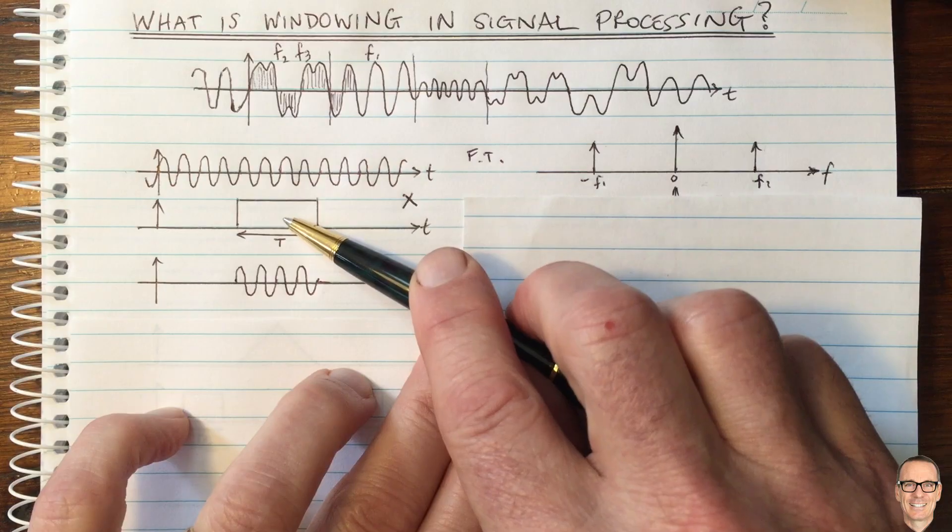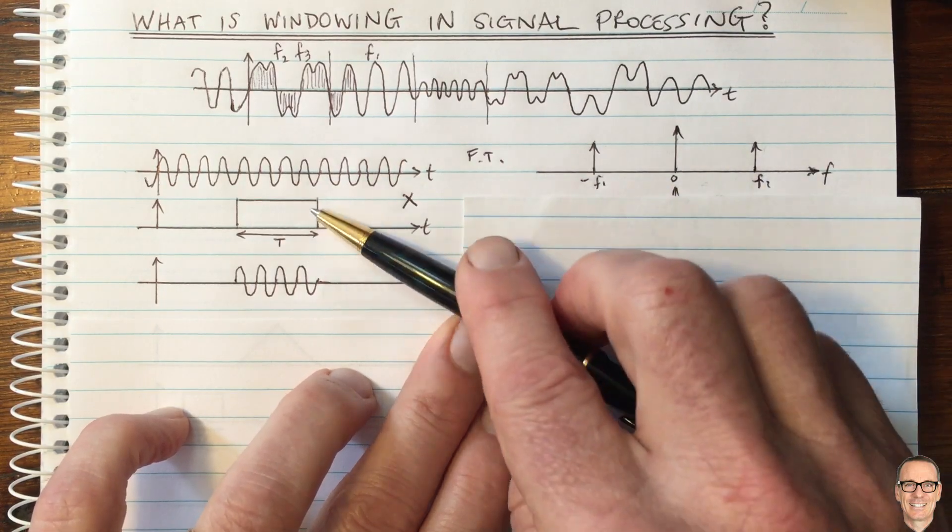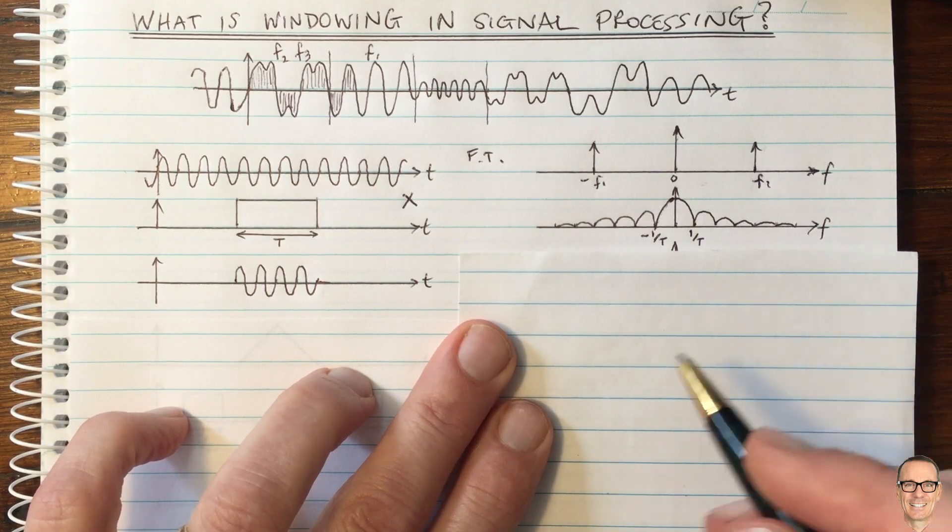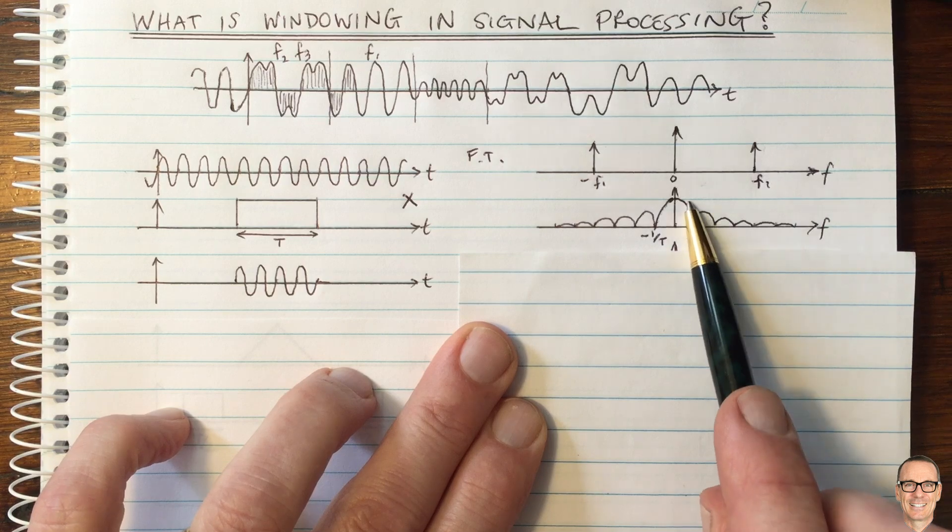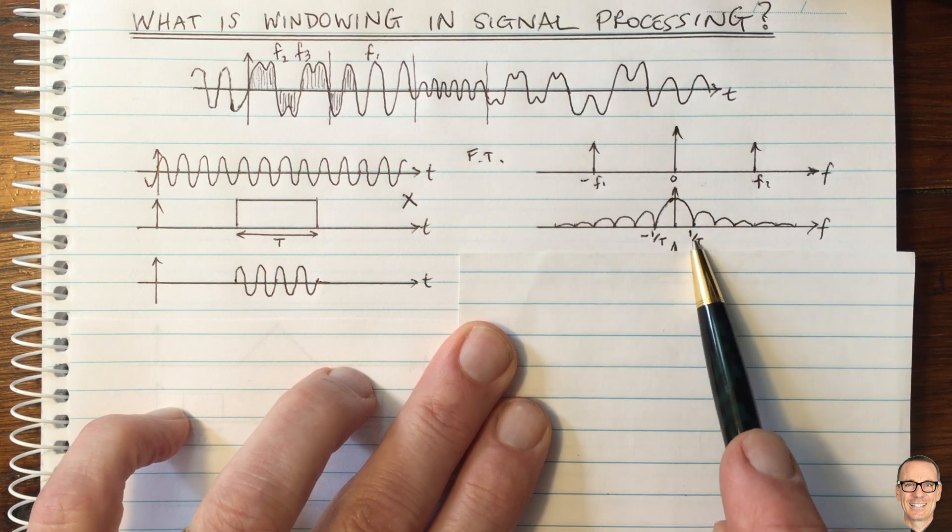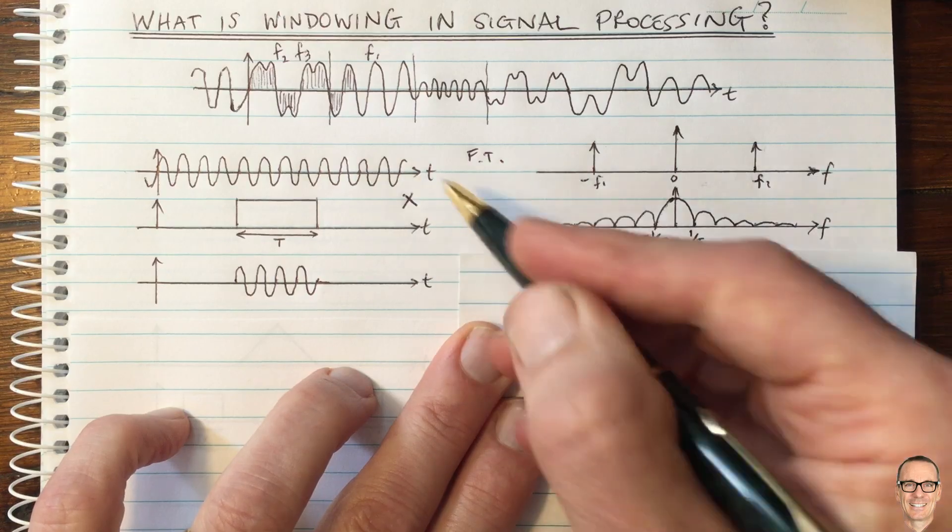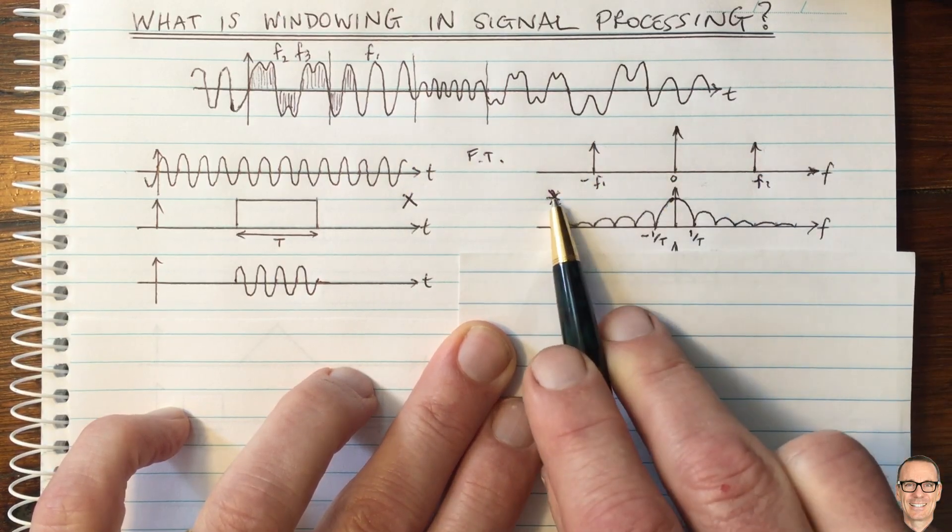So we need to know the Fourier transform of this rectangular so that we can do the convolution. Well, of course, the Fourier transform of a rectangle is a sinc function. And the width of this rectangle is capital T. And the first zero point from this sinc function is one divided by capital T. So again, we multiply in the time domain, so we are going to be convolving in the frequency domain.